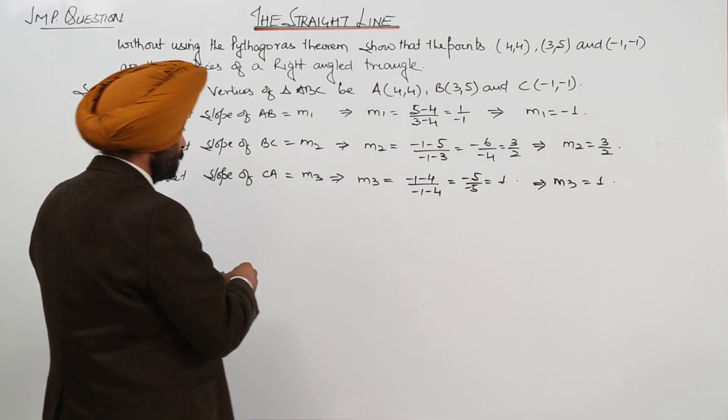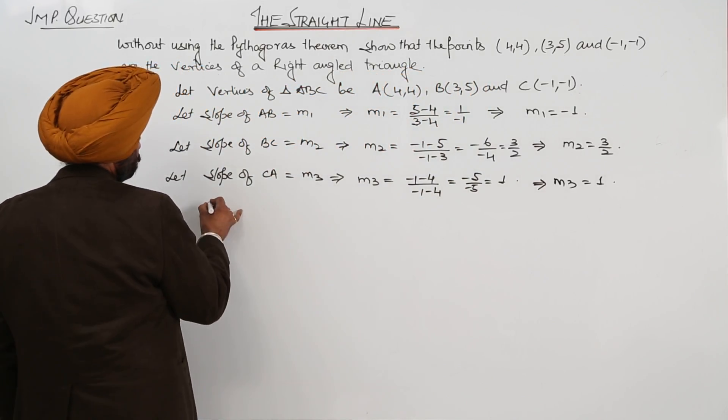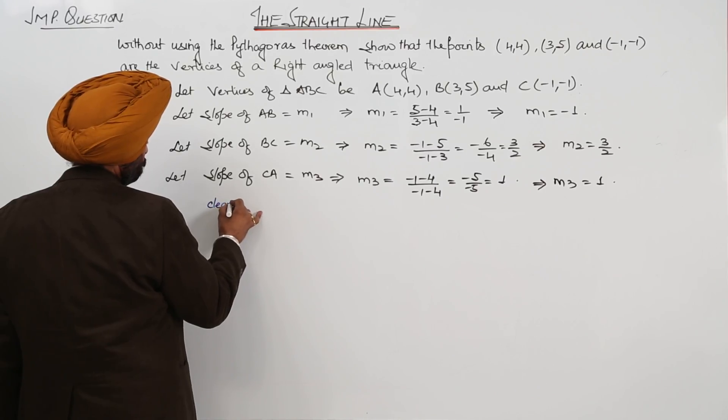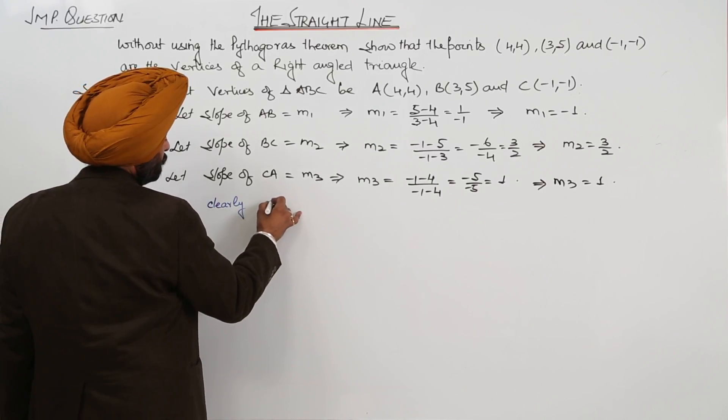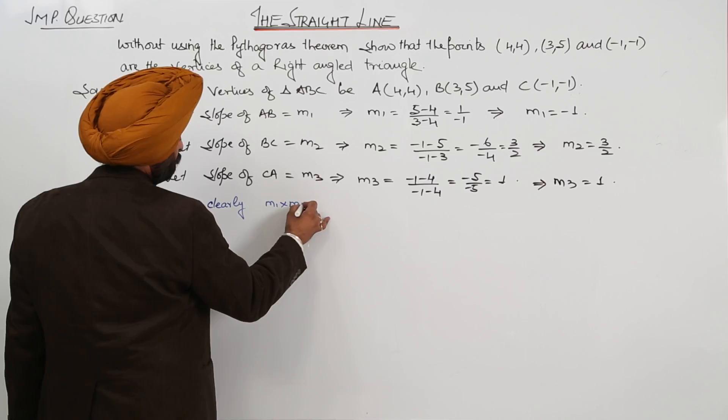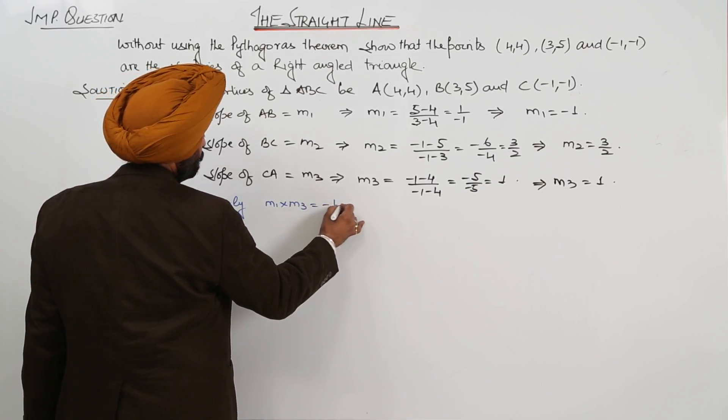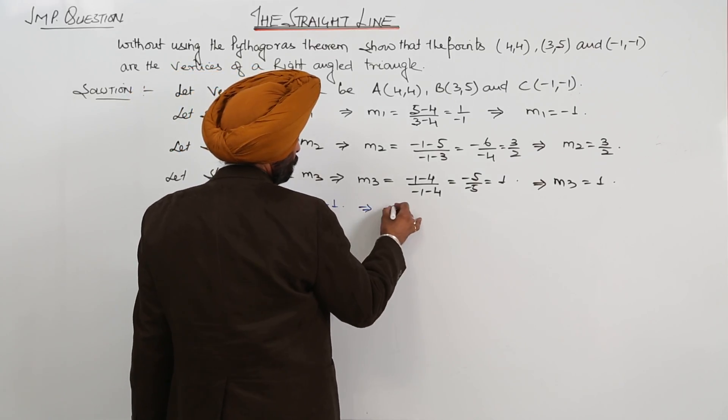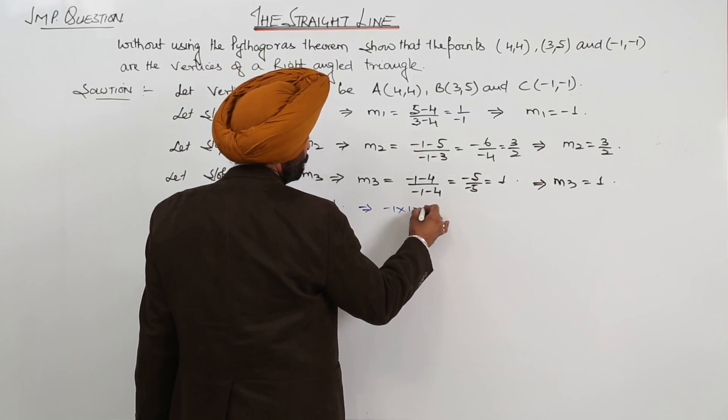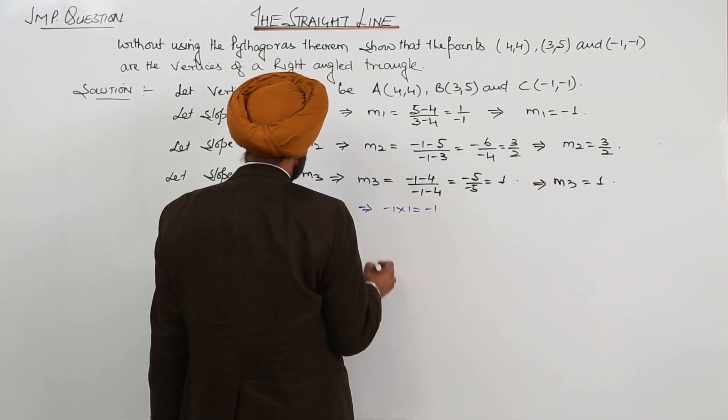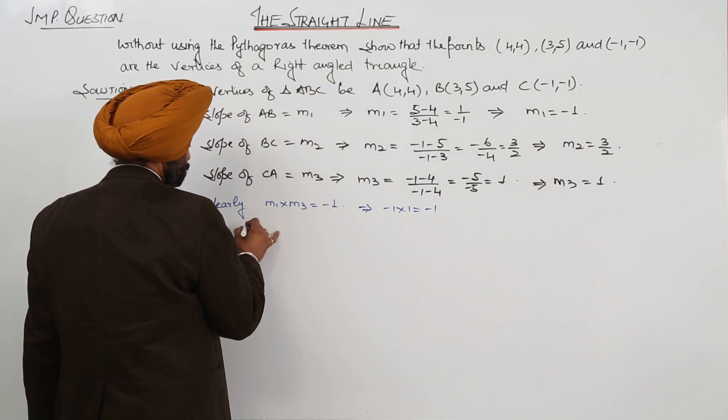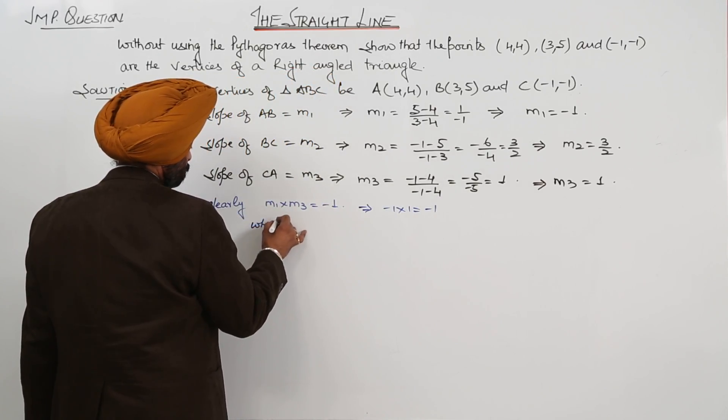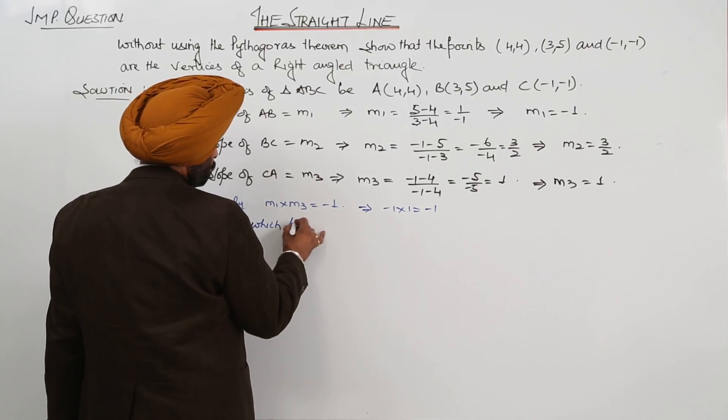Now, clearly, M1 times M3 equals negative 1. Negative 1 times positive 1 is negative 1. This proves